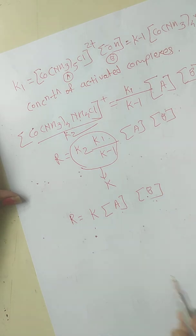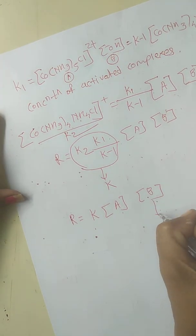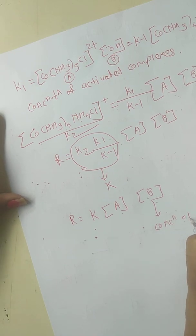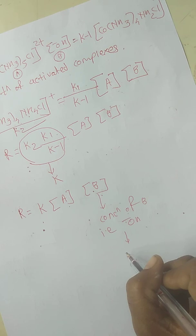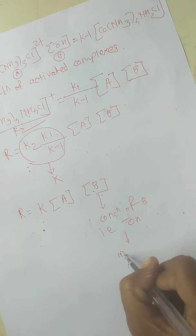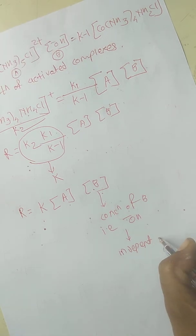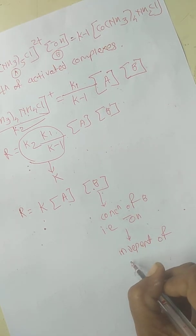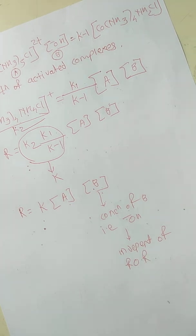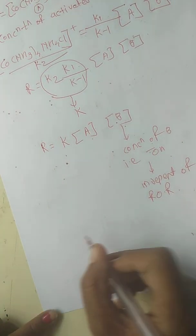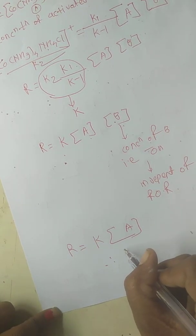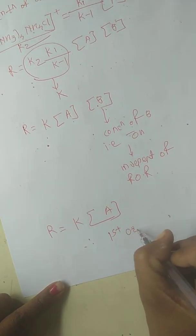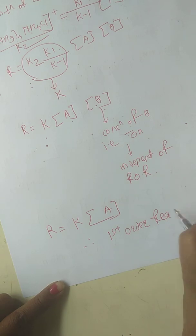But now, suppose we increase the concentration of B — that is nothing but our OH⁻. It becomes independent of the rate of reaction. So the only species involved in deciding the rate of reaction is A. Therefore, our reaction is a first-order reaction.